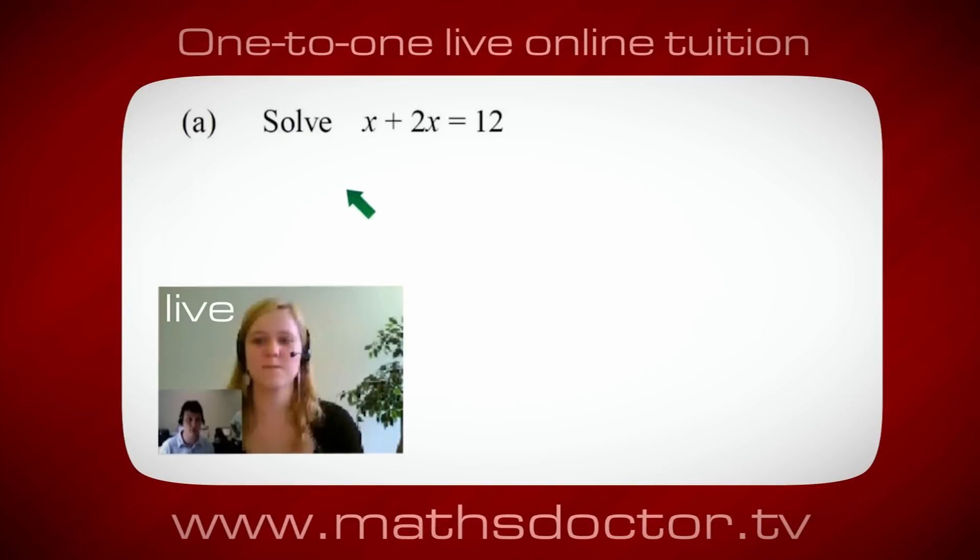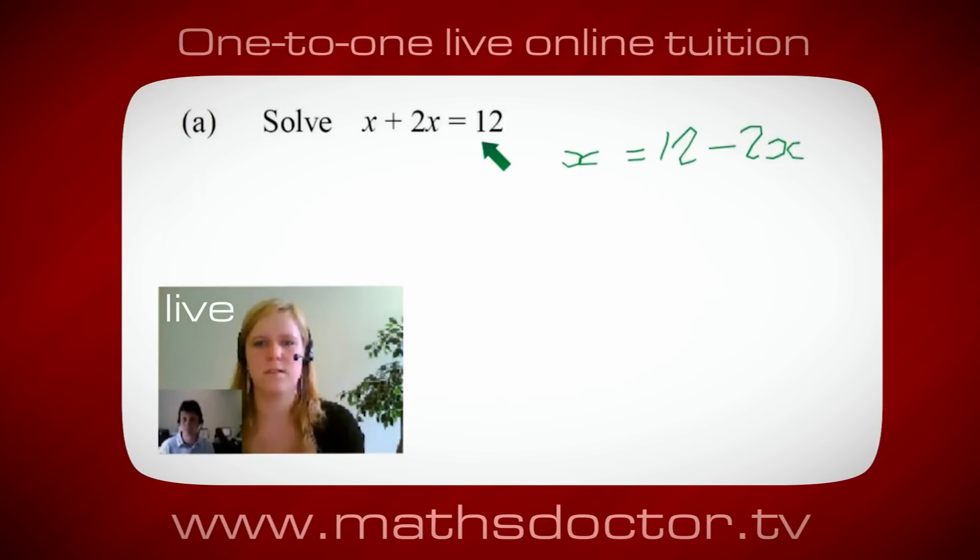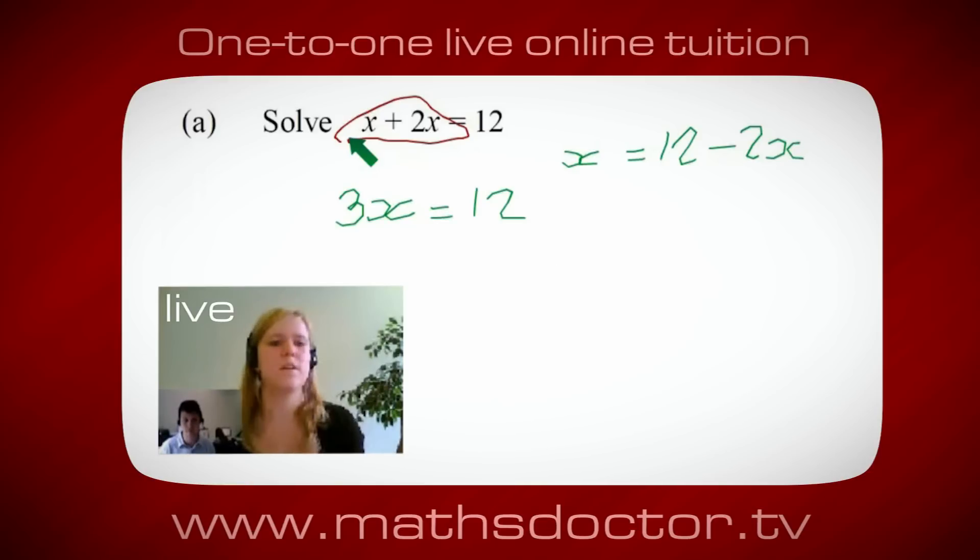Okay Marie, so let's have a look at this one. So solve x plus 2x equals 12. So what do you think you do first? Okay well I want x on its own. So I would put x equals 12 minus 2x. Okay so a lot of the time we want to get x by itself. But what we want to do first is get all of these x's together. So can you see anything we can do with this? Get all these together in one place. Oh okay it's 3x isn't it? Yeah absolutely. So 3x equals 12. Oh and so x equals 4. Brilliant, spot on, well done.